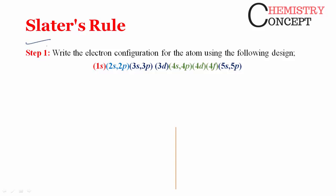The first step is to write the electronic configuration in a specific order, arranging orbitals in groups. In the first group: orbitals of the first shell (1s). Then 2s and 2p together in one group, 3s and 3p in one group, 3d separately, 4s and 4p together, 4d separately, 4f separately, 5s and 5p together, 5d in another group, and 5f in another group.